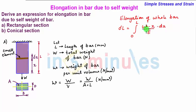Now taking this constant terms out we have delta L is equal to small w by E into integral of 0 to L x into dx.